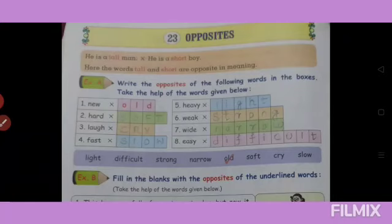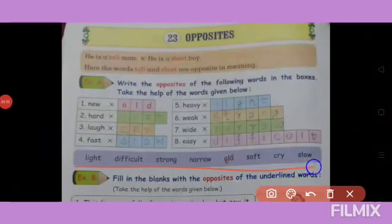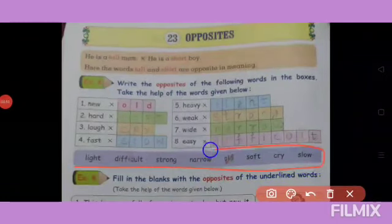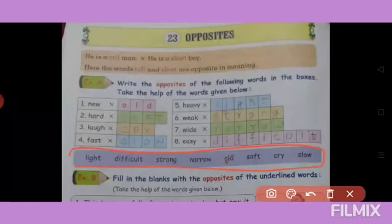Exercise A: Write the opposite of the following words in the boxes. Take the help of the words given below — us box mein jo words hain, unke help se upar ke opposites match karne hain. For example, new — new ka opposite kya hota hai? Old. O-L-D. Old.